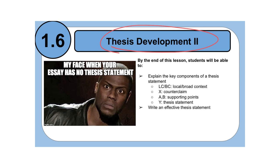By the end of this lesson, you should be able to do the following: explain the key elements of a thesis statement, which are local and broader context, the counterclaim, supporting points, and then your actual thesis statement. You should also be able to effectively write a thesis statement. We're going to use this lesson today to practice that in our Commonwealth groups, so that by the end of our lesson today, you should be able to write an effective thesis statement.